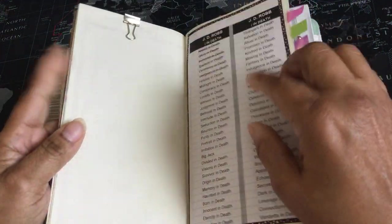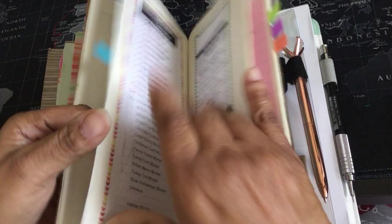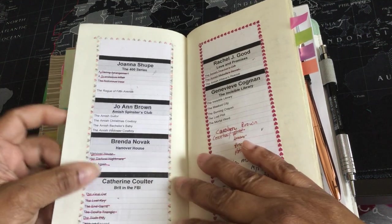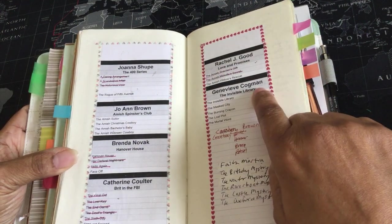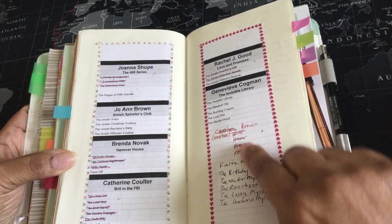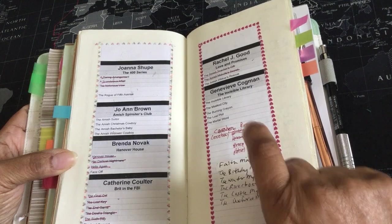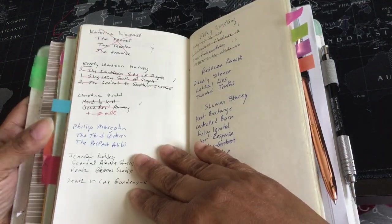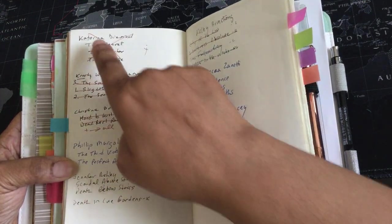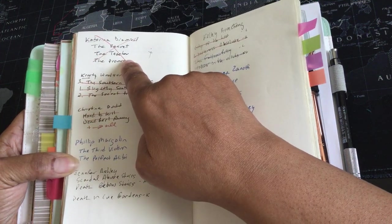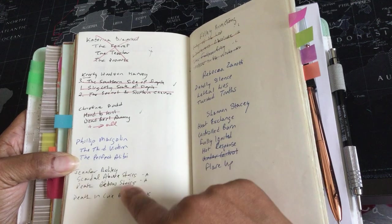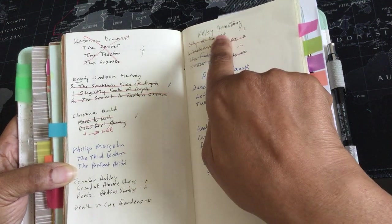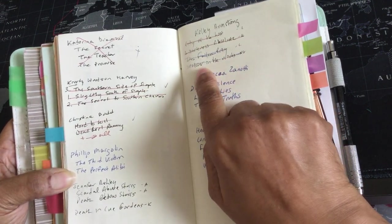This insert here is my series. J.D. Robb, Leslie Meyer, Paula Quinn, Amy Jarecki, Karen Rainey, Joanna Shoup, Joanne Brown, Brenda Novak, Catherine Coulter, Rachel J. Goode, Genevieve Cogman, which I haven't started yet. Carolyn Brown, which I've read all of these, but the newest one just came out, so I think I just got it yesterday. Faith Martin, I've read all of those. Christy Woodson Harvey, I've read all of those. Katerina Diamond has a big X because I hated that series. Philip Margolin, I've read those. Jennifer Ashley, I've read all of those.